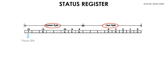Bit 15 is called the trace bit. When it is set to 1 by a programmer, the programmer has the ability to trace his or her program execution one line at a time for debugging purposes. Debugging is the activity of finding errors in a program. In order to set this bit to 1, you would have to be in the supervisor mode of the 68k microprocessor.